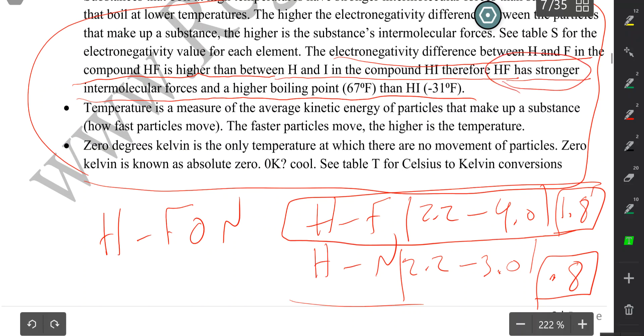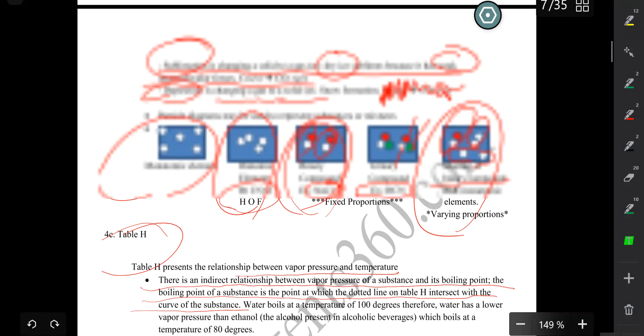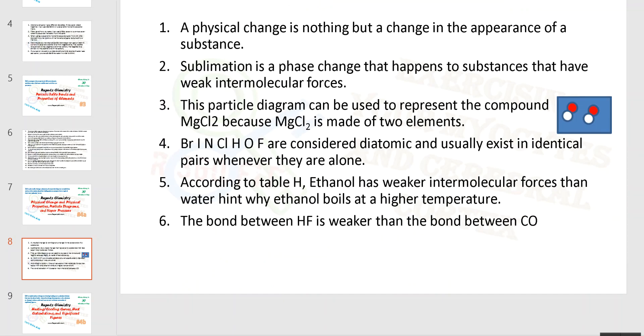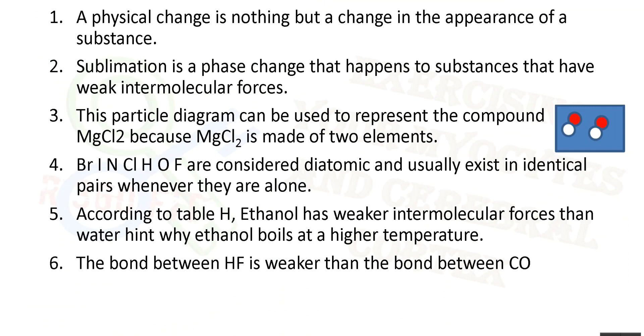So HF has stronger intermolecular forces and a higher boiling point. It boils at 67 degrees Fahrenheit, while HI here is boiling at 31 degrees. If you were talking about HN, obviously you'll have a lower boiling point than HF as well. So that's pretty much our lesson for today. Let's go back to the questions. Read the following statements and determine whether they're true or false. All right, thank you.